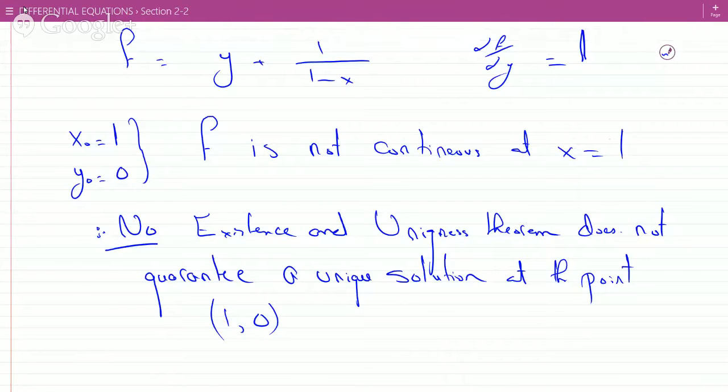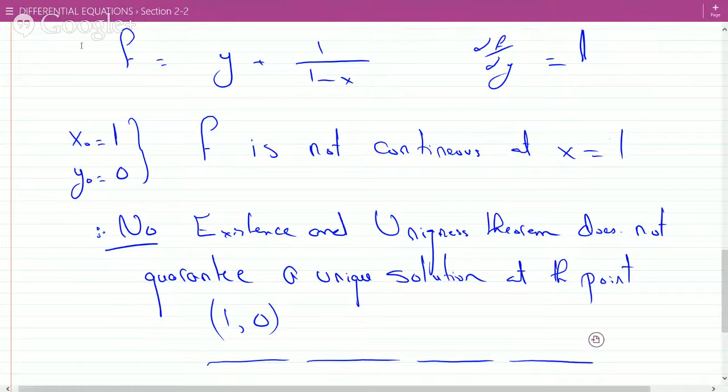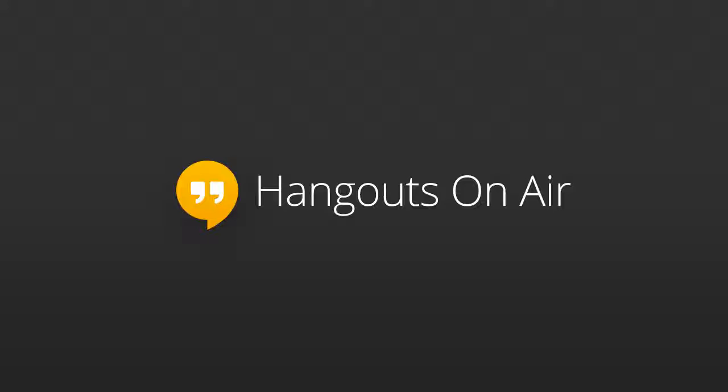And yes, x equals 1 is an asymptote. That is. Right. Questions? Okay. Good.